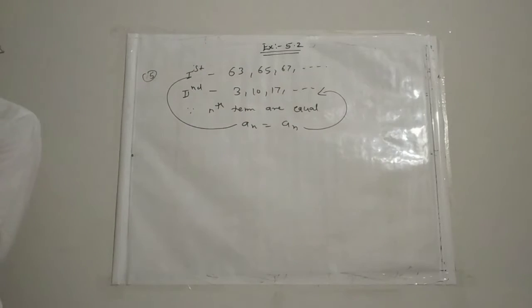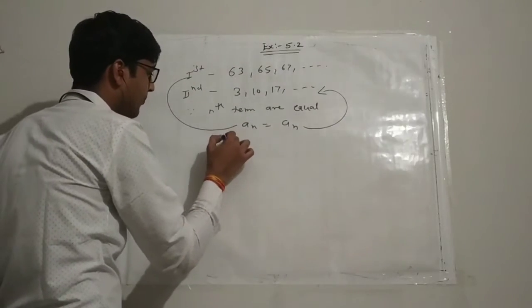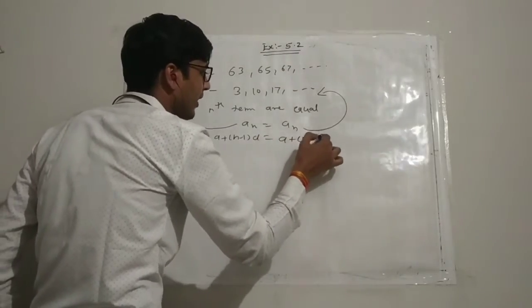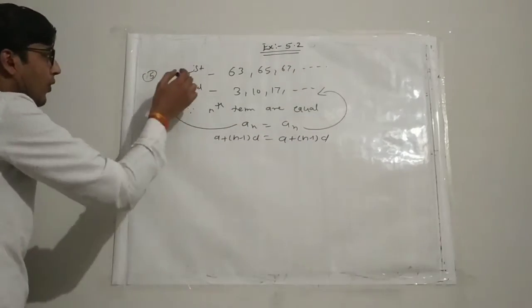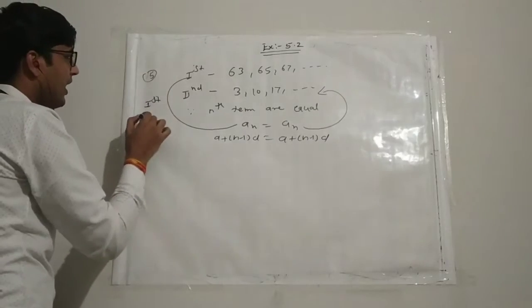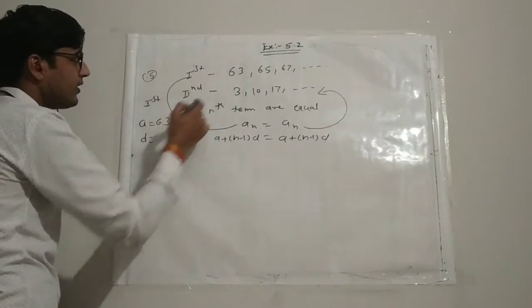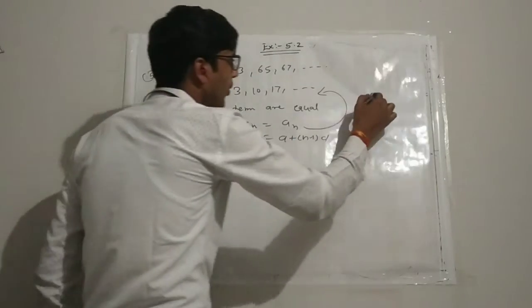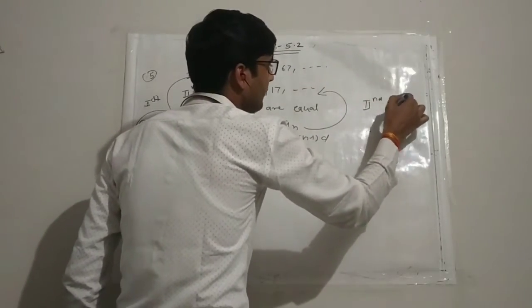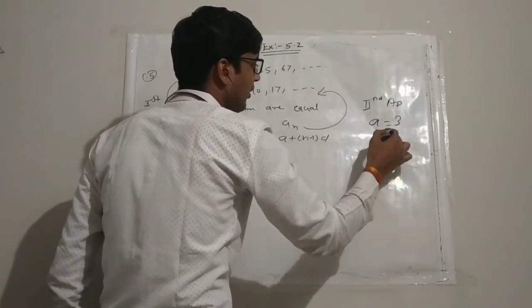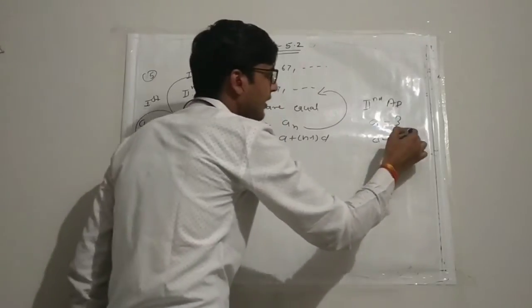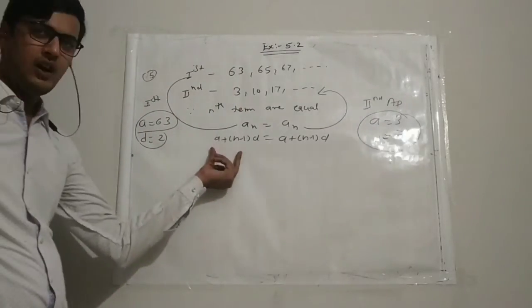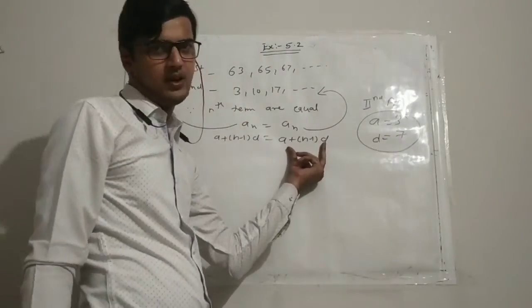The nth term formula is a plus n minus 1 times d. For the first AP, a equals 63 and common difference d equals 65 minus 63, which is 2. For the second AP, a equals 3 and common difference d equals 10 minus 3, which is 7.